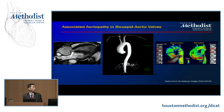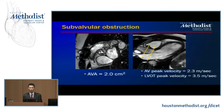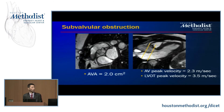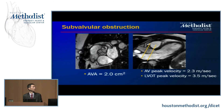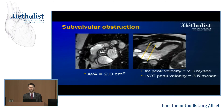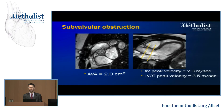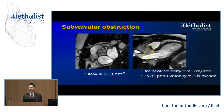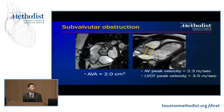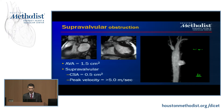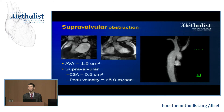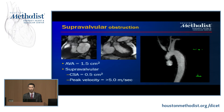For bicuspid valve cases, work by our colleagues at Northwestern has demonstrated a predilection toward increased wall shear stress, and it is recognized that bicuspid aortic valves have an associated aortopathy that surgeons will want to know about at the time of repair. CMR can also interrogate subvalvular obstruction in great detail — shown here, anatomic valve area confirmed no significant valvular stenosis, but peak velocity occurred at the LVOT at 3.5 m/s. Similarly, supravalvular obstructions, as in Williams syndrome, can be identified and localized.